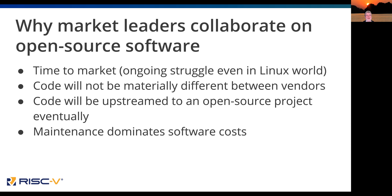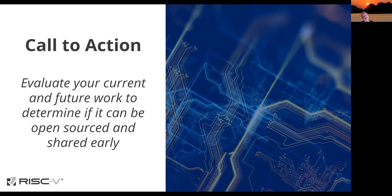A lot of times there's not going to be a material difference — bit manipulation has been around a long time. It's not going to matter whether you do code generation in one compiler or another; it's going to be fairly similar. If you're working in open source tools or operating systems, it has to be upstreamed at some point because you're required to do that. Maintenance dominates software costs. If you have problems when you put things out in the field — reputation, recalls, customer dissatisfaction — that costs more than anything else. The call to action: evaluate your current work, see if it can be done in open source, and share it early and often.